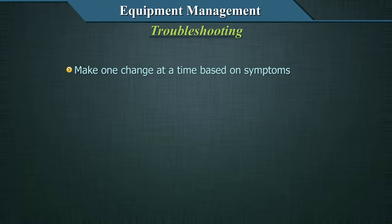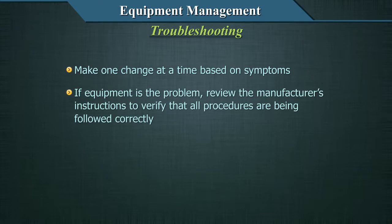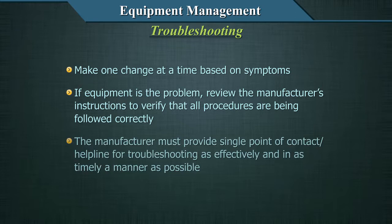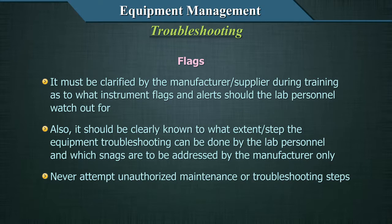Make one change at a time based on symptoms. If equipment is a problem, review the manufacturer's instructions to verify that all procedures are being followed correctly. The manufacturer must provide a single point of contact or helpline for troubleshooting as effectively and in as timely a manner as possible. It must be clarified by the manufacturer or supplier during training as to what instrument flags and alerts lab personnel should watch out for, and to what extent troubleshooting can be done by lab personnel versus what must be addressed by the manufacturer only.